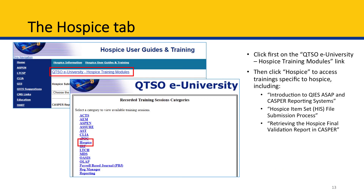The last sub-tab within the Hospice tab is the QTSO eUniversity Hospice Training Modules tab. When you click on this link, you'll get a pop-up as shown on slide 13. To access the hospice-specific trainings, simply click on Hospice. Examples of the training modules available through QTSO eUniversity are shown here on slide 13.